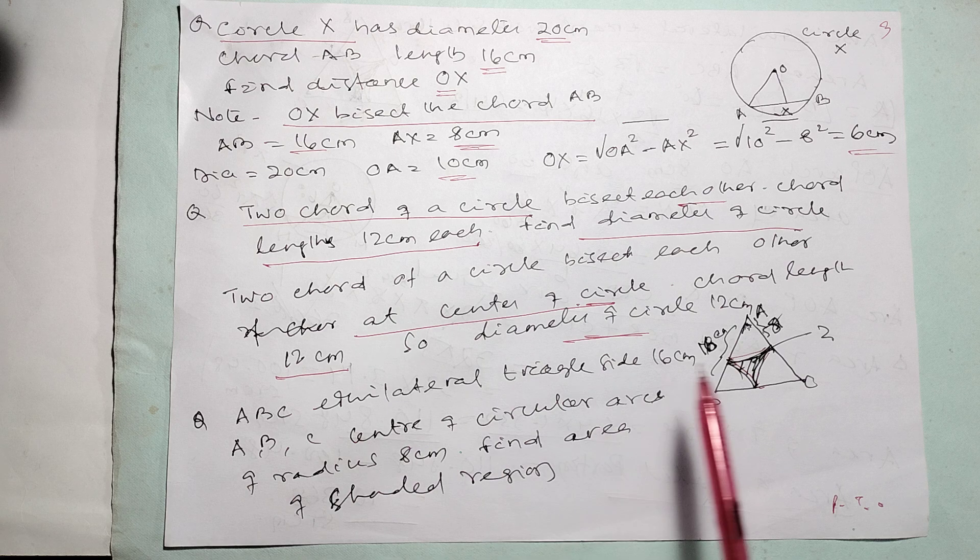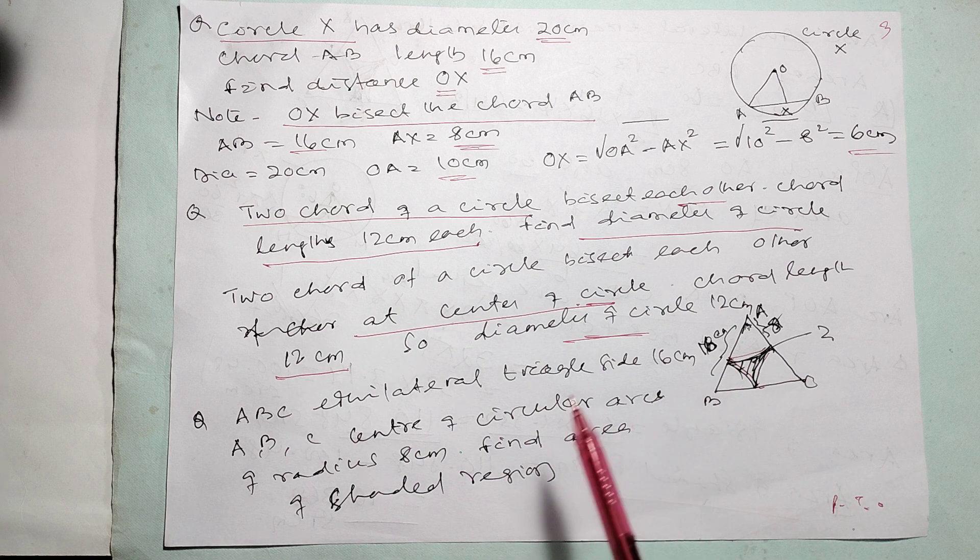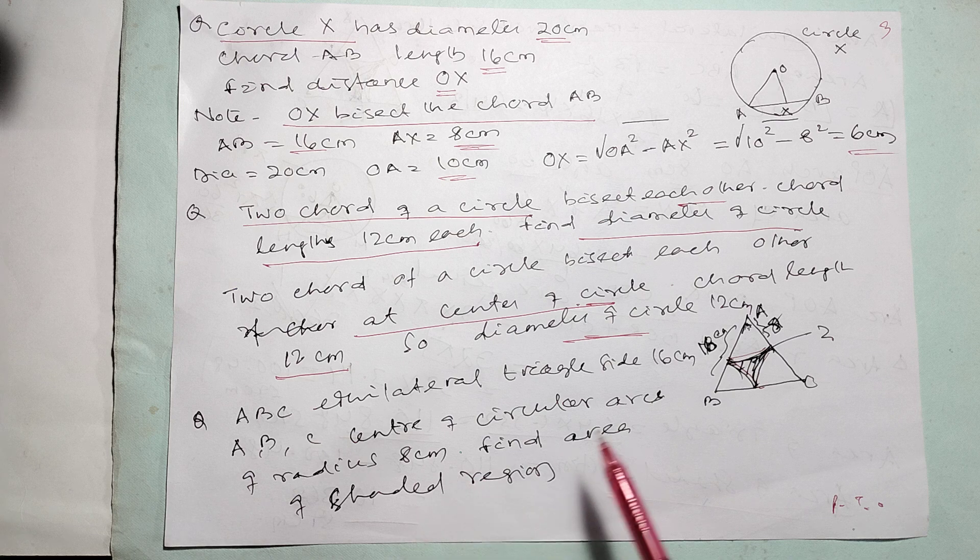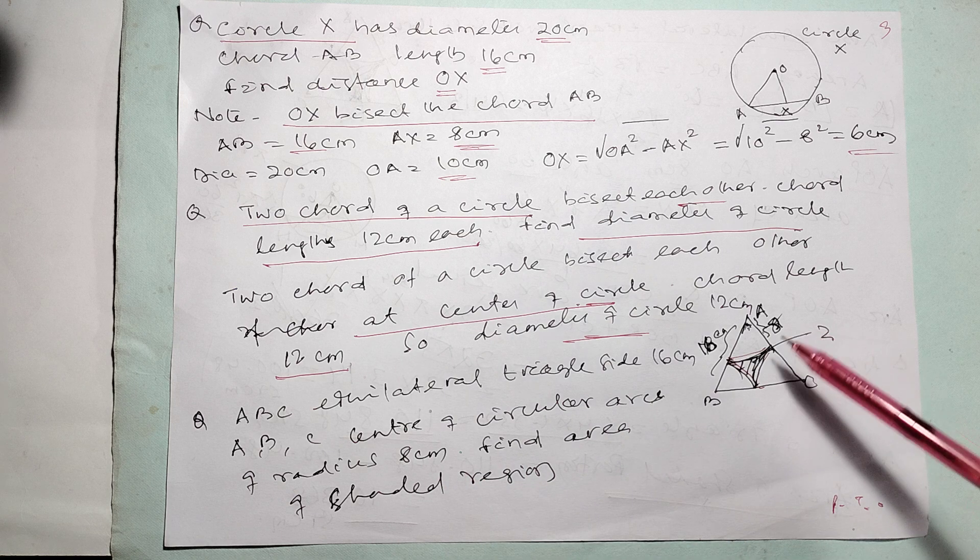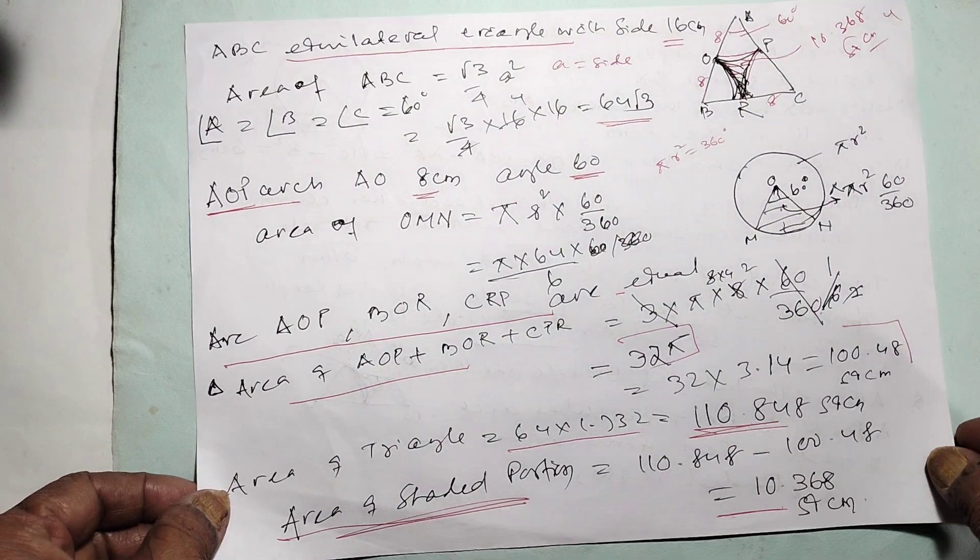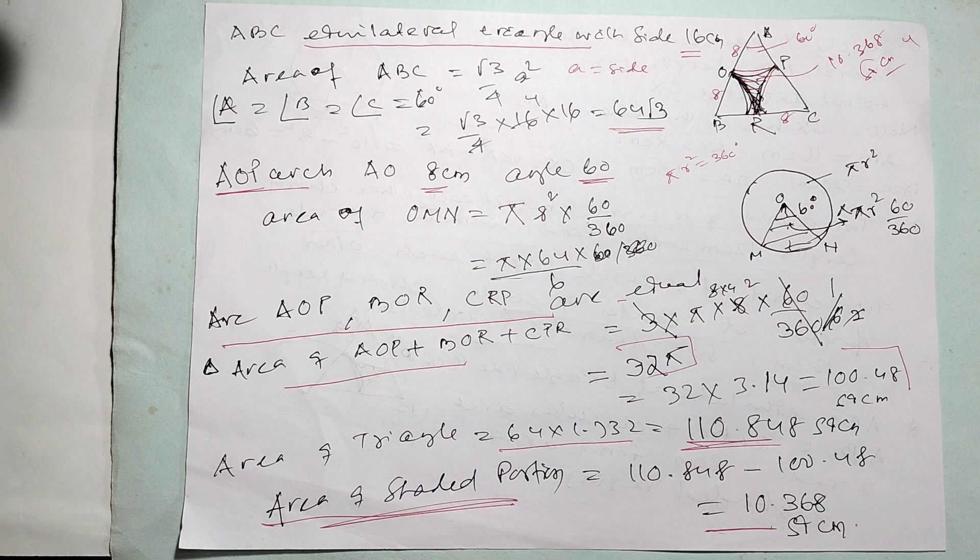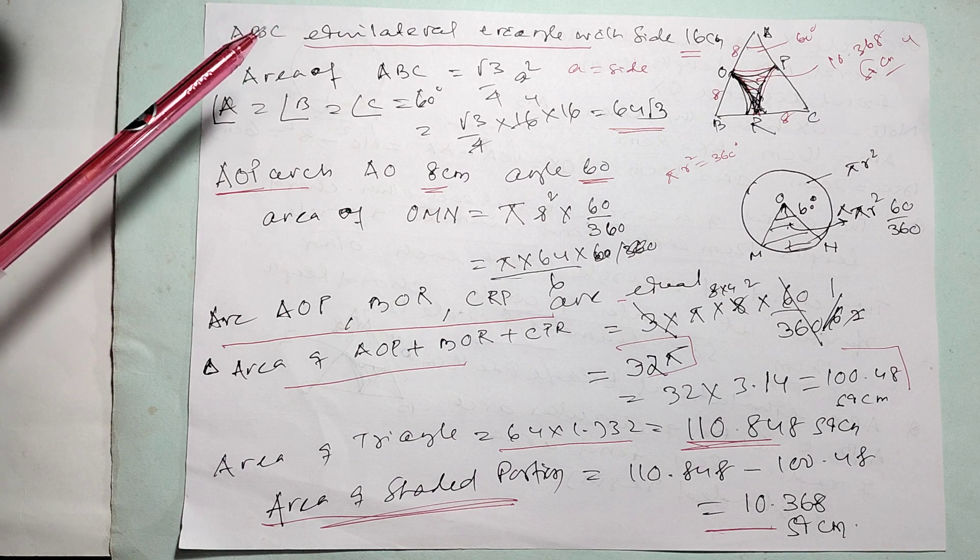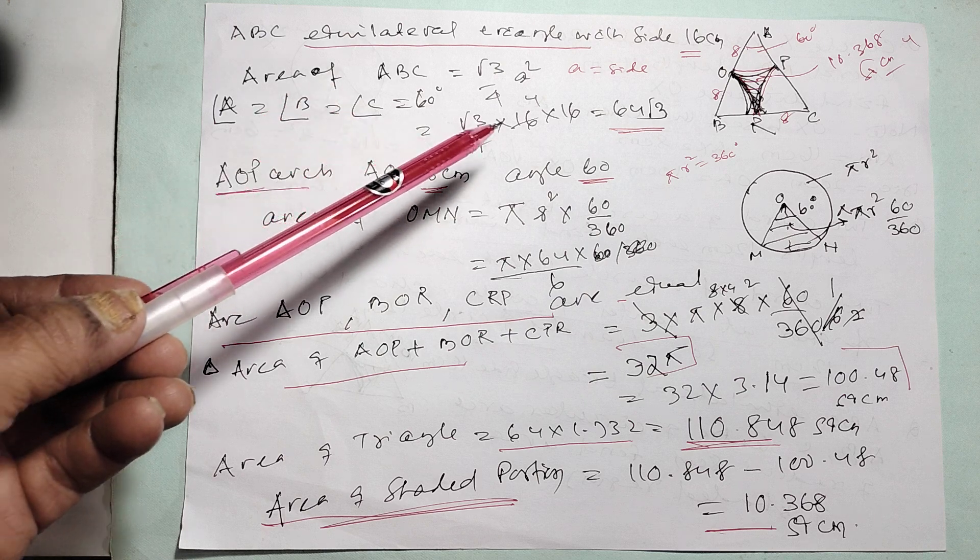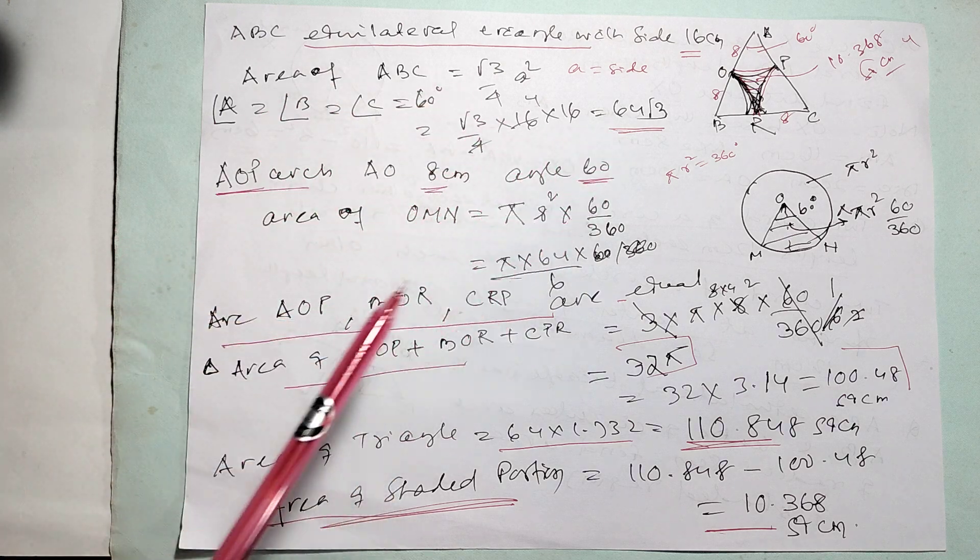Here, most important problem. Equilateral triangle is there. Your side is 16 centimeter. Three chords, the arc is there. The radius is 8 centimeter. Find the area of the center region. This is the important problem. And here, mind it. ABC is equilateral triangle. Means, your area is root 3 by 4. A square. That is 64 into root 3.